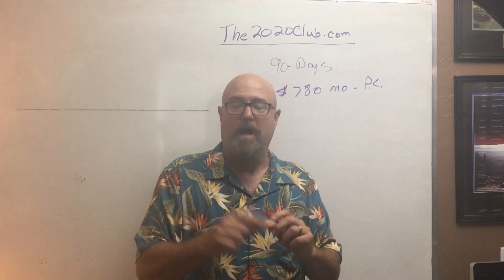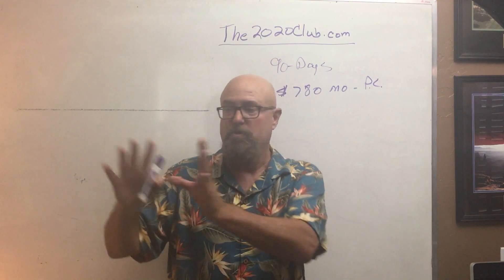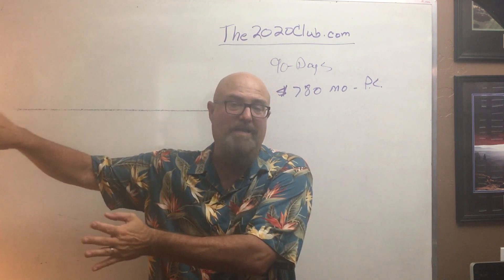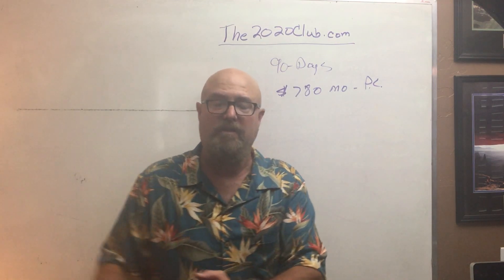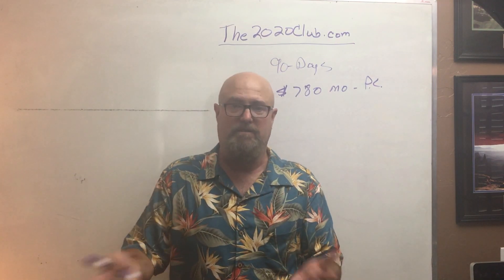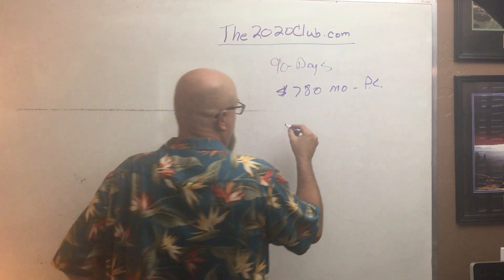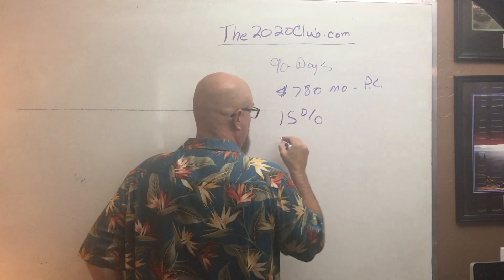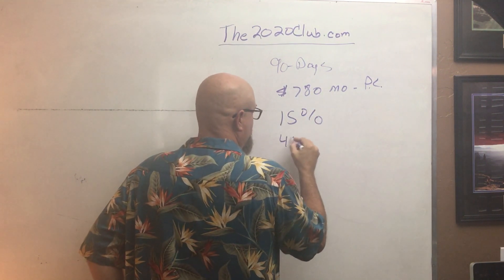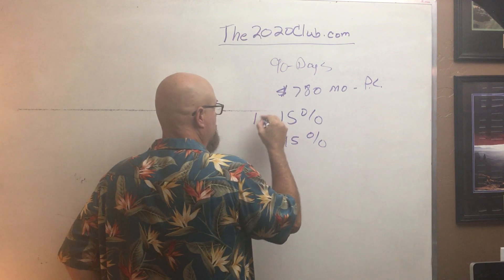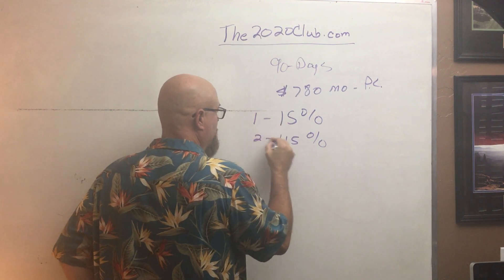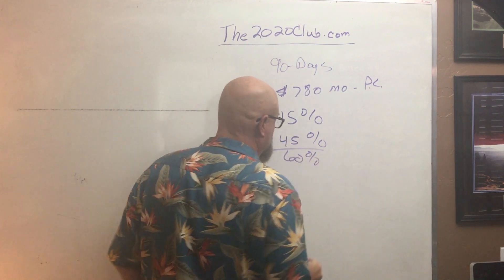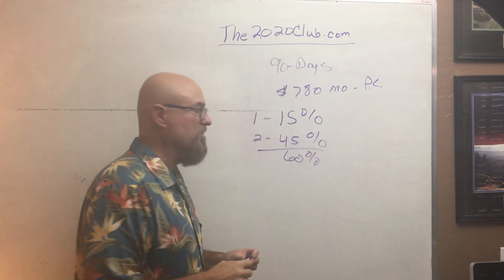Option number two is you can promote this to your organization, crossline, or list to come in and build the business. At ProfitLeads, we pay you 15% on level one and 45% on level two — we pay out 60% in commissions on those two levels.